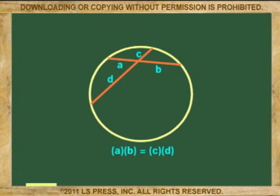Notice what I'm saying. I'm saying the products, so that if part A is 5 and part B is 6, the product is 30. And if the product of A and B is 30, then the product of C and D must also be 30.